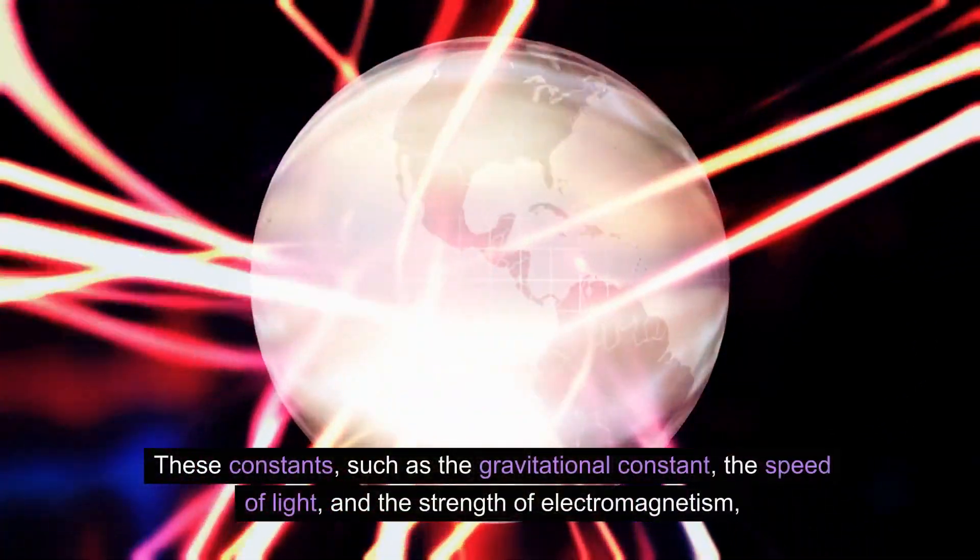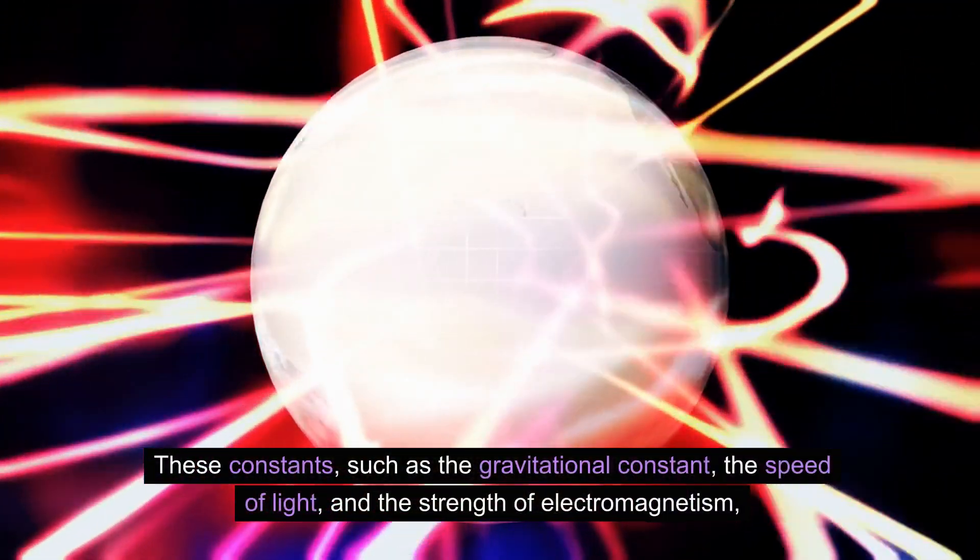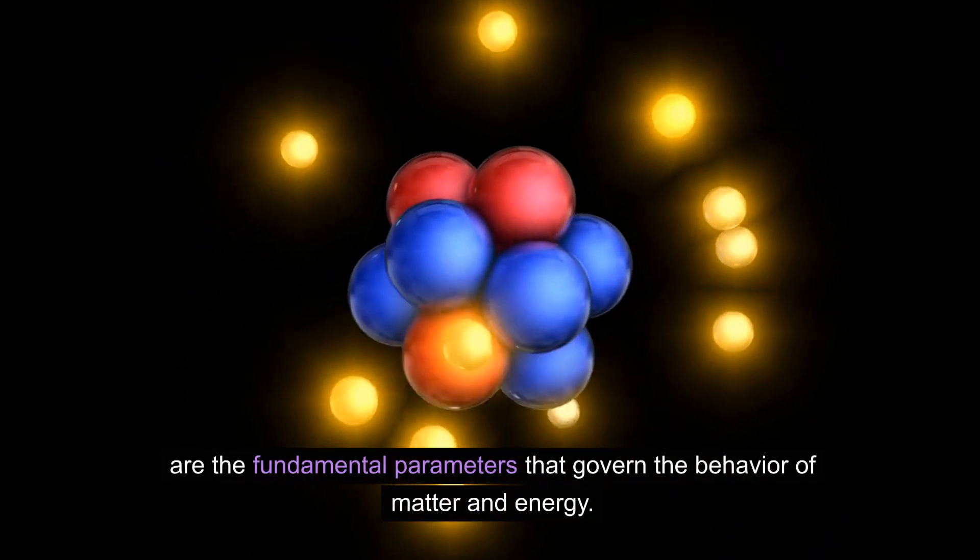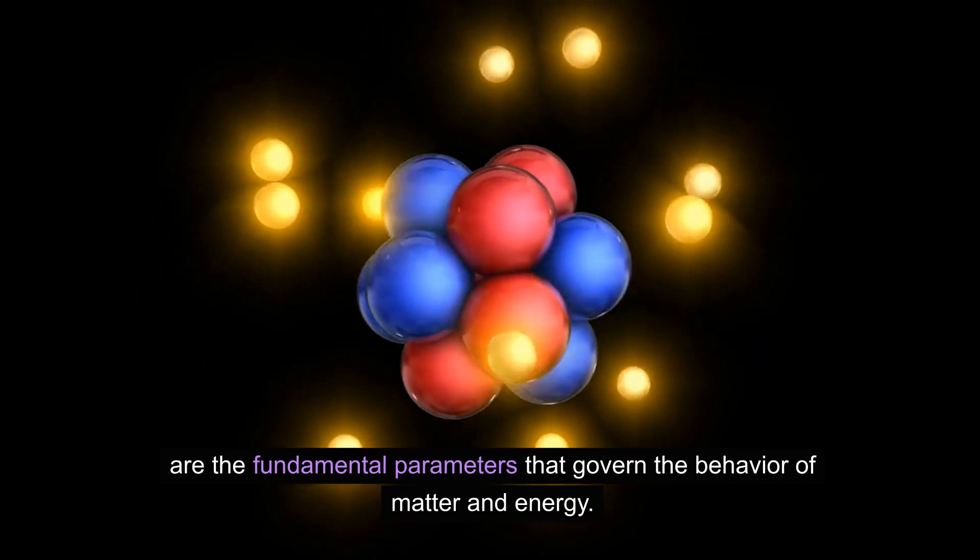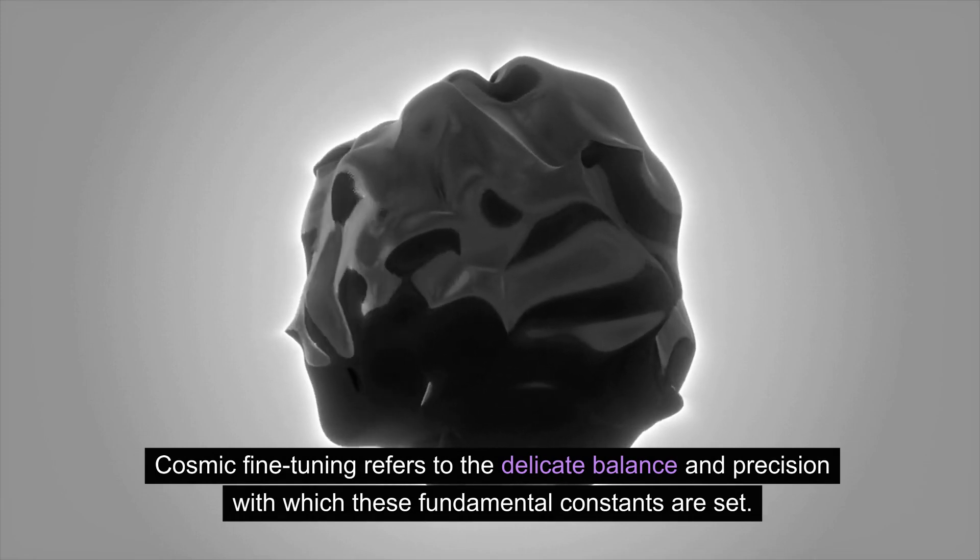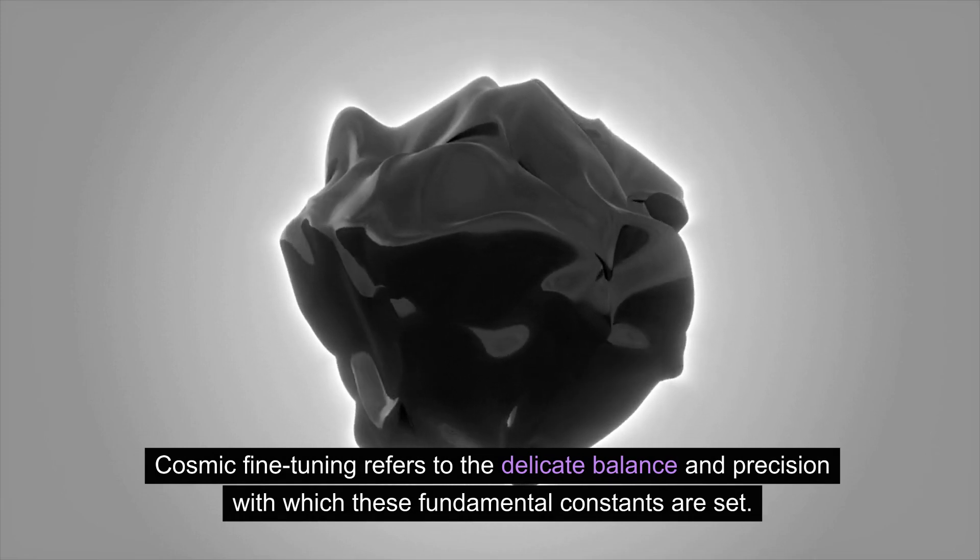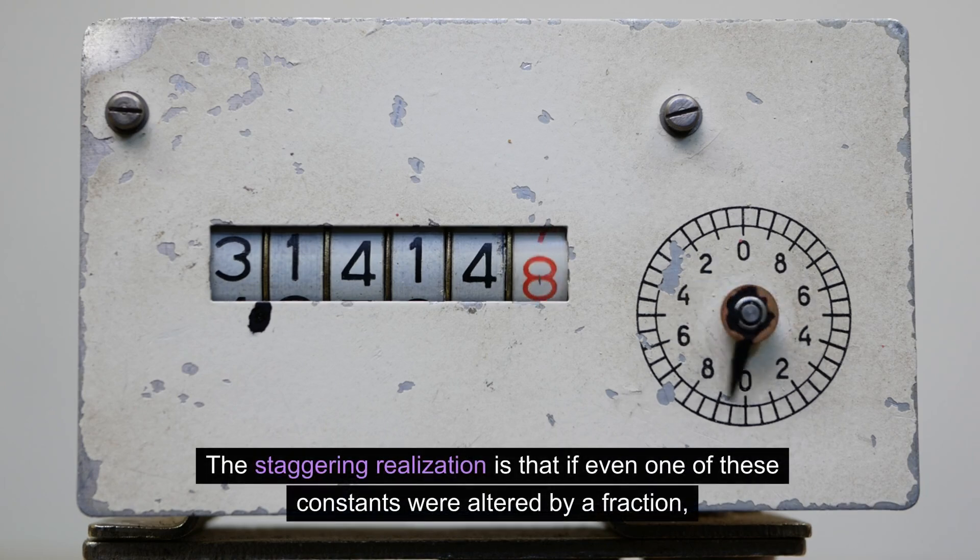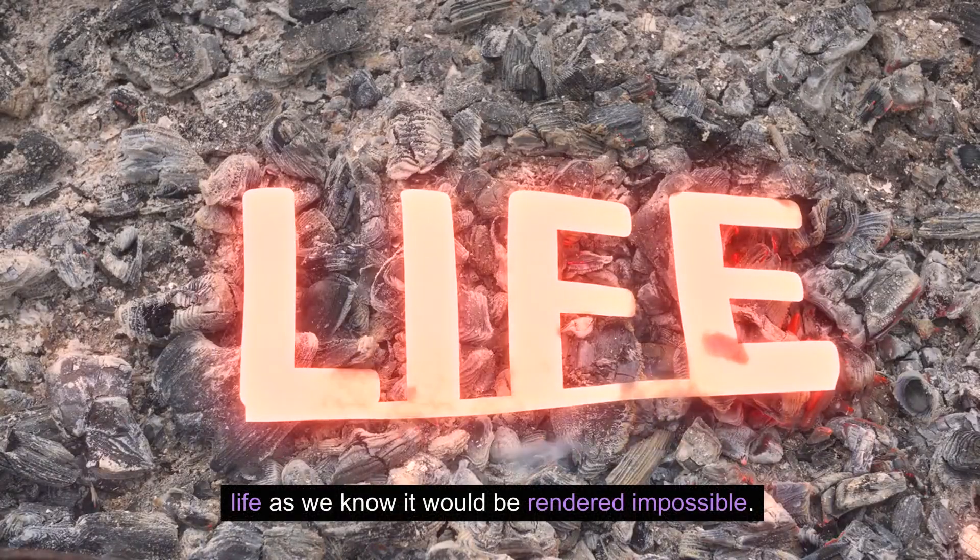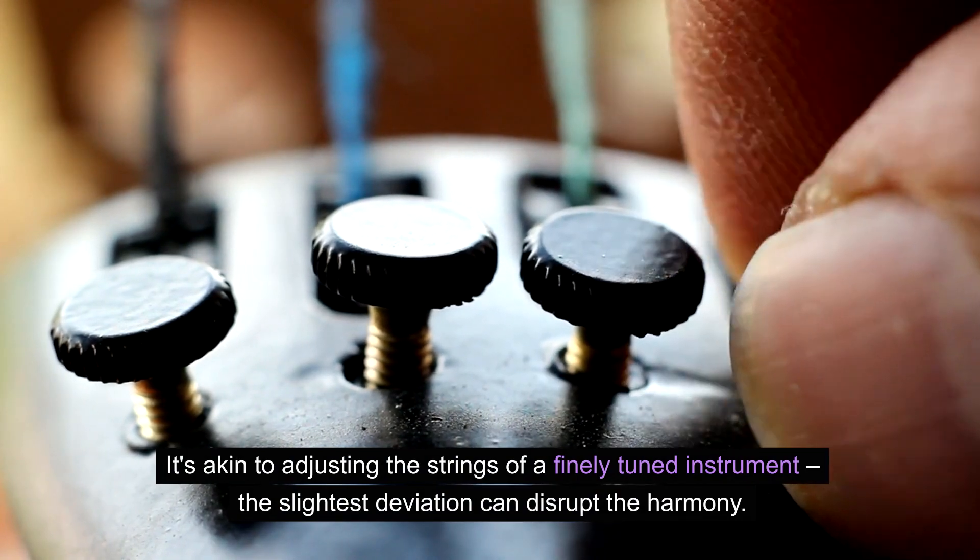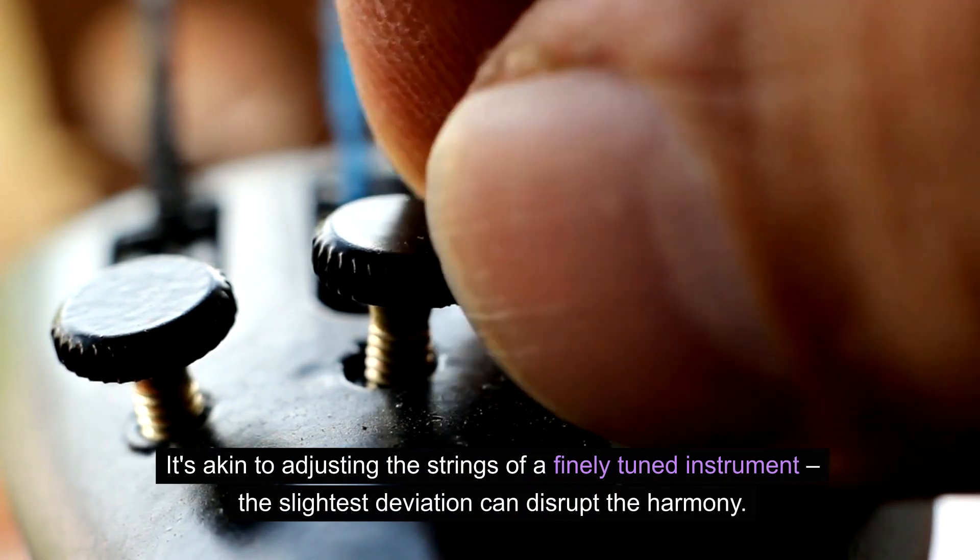These constants—such as the gravitational constant, the speed of light, and the strength of electromagnetism—are the fundamental parameters that govern the behavior of matter and energy. Cosmic fine-tuning refers to the delicate balance and precision with which these fundamental constants are set. The staggering realization is that if even one of these constants were altered by a fraction, life as we know it would be rendered impossible. It's akin to adjusting the strings of a finely tuned instrument; the slightest deviation can disrupt the harmony.